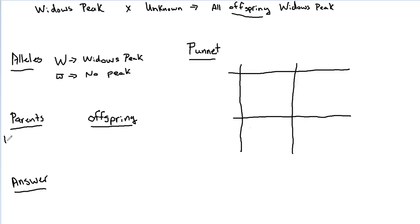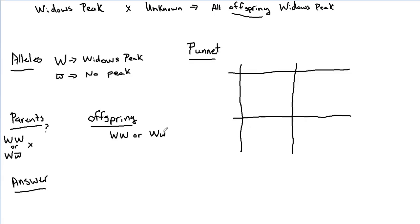For the parents, we definitely have one with widow's peak. That parent could be homozygous dominant (WW) or heterozygous (Ww) — we currently don't know. For the other parent, once we look at the offspring we should be able to figure it out. All offspring have the widow's peak, so the offspring are either all homozygous dominant (WW) or heterozygous (Ww), or some mixture of those two.